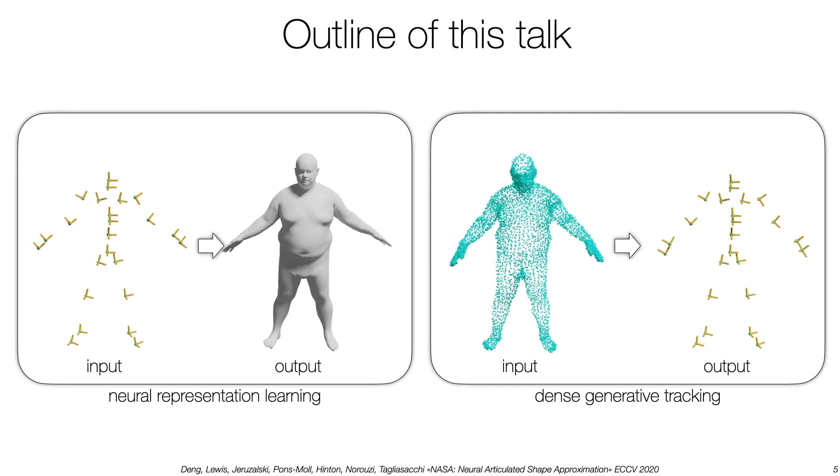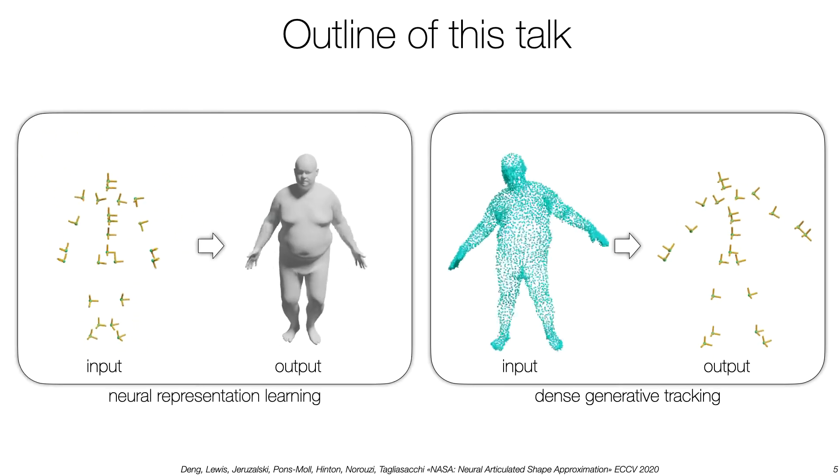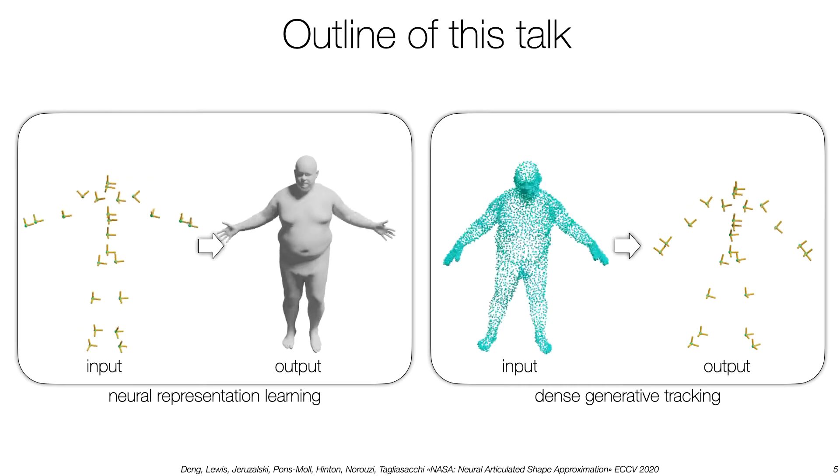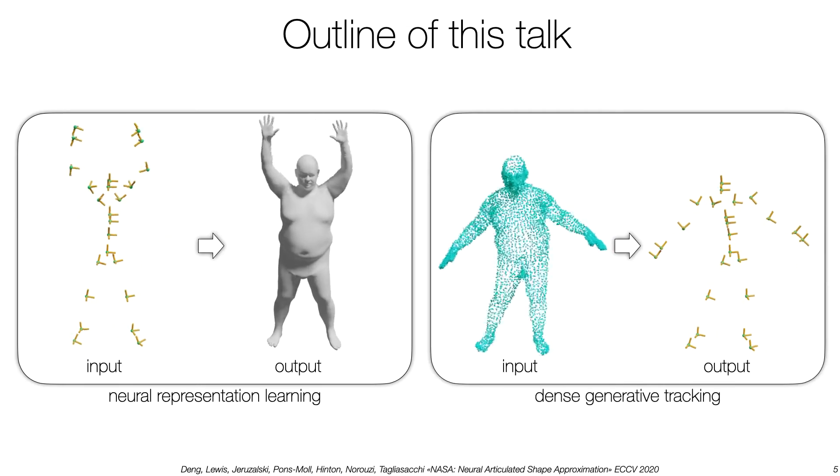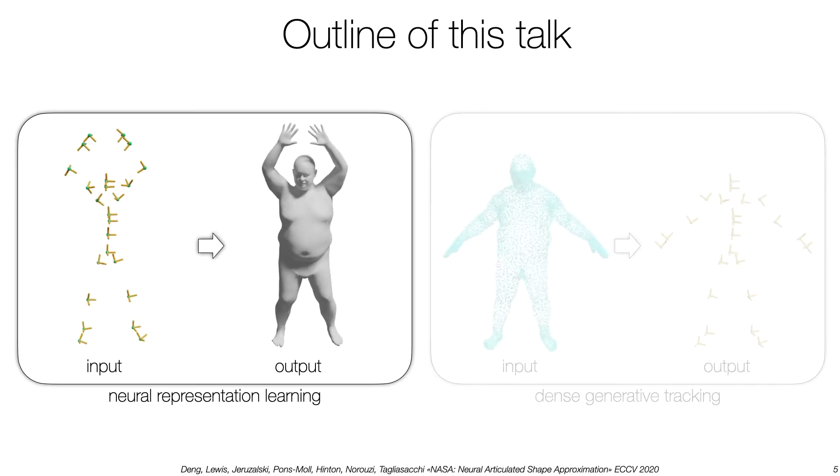In this talk, we cover two main topics. We investigate how to represent articulated objects with neural networks. We then use these representations to power classical 3D vision tracking tasks. Let's start from representation learning.